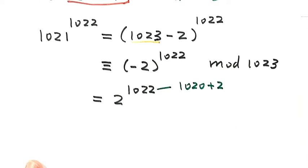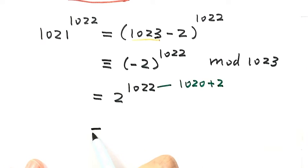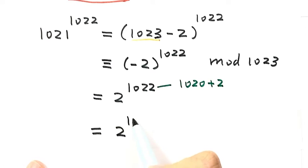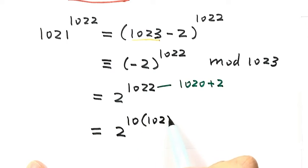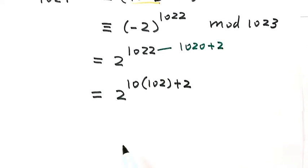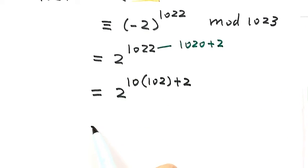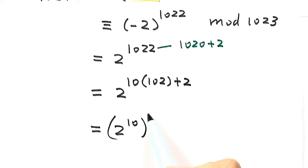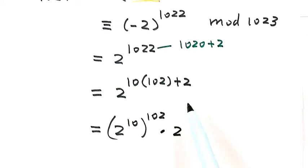This equals 2 to the power of 10, times 102, plus 2. We can rewrite this as 2 to the power of 10, to the power of 102, times 2 to the power of 2.